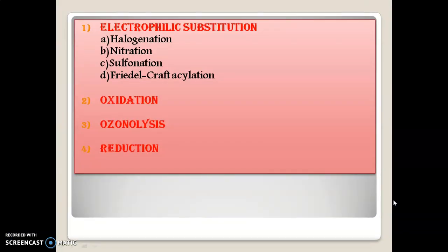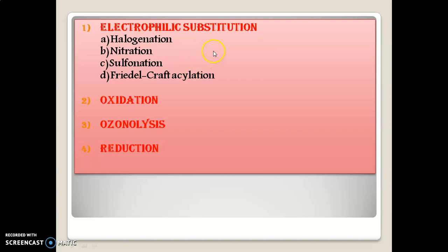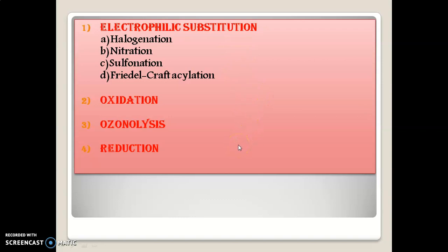The chemical reactions of phenanthrene include: electrophilic substitution reaction, oxidation reaction, ozonolysis reaction, and reduction reaction. Electrophilic substitution specifically includes halogenation, nitration, sulfonation, and Friedel-Crafts acylation. There are specific positions at which these reactions take place, and we are going to study these reactions in detail in today's session.